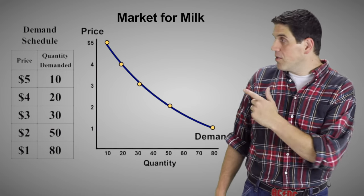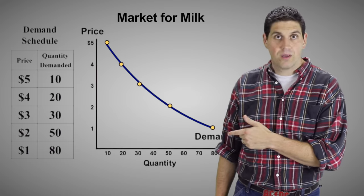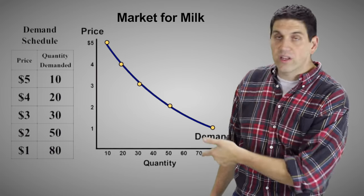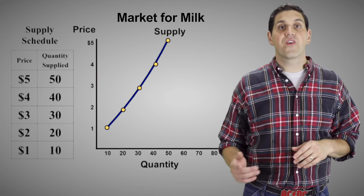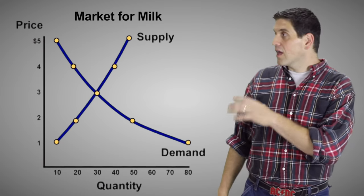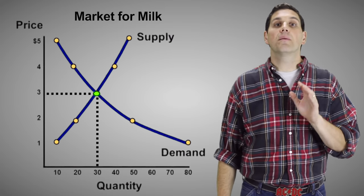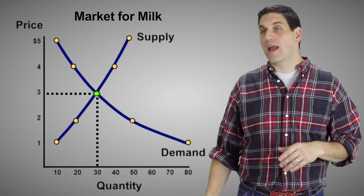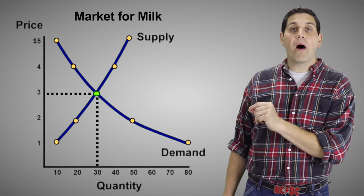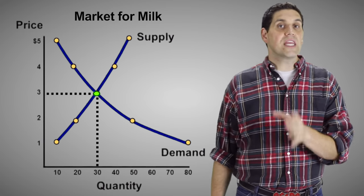Now we finally have enough information to put supply and demand together. Over here we have the demand schedule and demand curve from the market we talked about in the previous video — the market for milk. Remember, demand goes to the dirt. Right here we have the supply curve for milk that we talked about in this video. And of course, supply goes up to the sky. Now they come together and set the market equilibrium price and quantity, sometimes called the market clearing price and quantity. $3 is the one spot where the quantity demanded exactly equals the quantity supplied — that's called equilibrium.